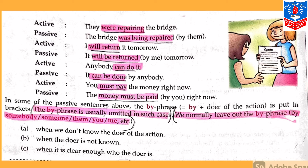Next active voice sentence: 'I will return it tomorrow.' In this case, 'tomorrow' is an adverb of time — it is not the object. The object is the word 'it', so 'it' will become the subject of passive voice. We will write: 'It will be returned by me tomorrow.' Next example — active voice: 'Anybody can do it.' Passive: 'It can be done by anybody.'